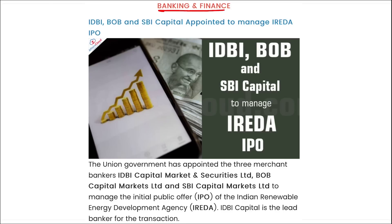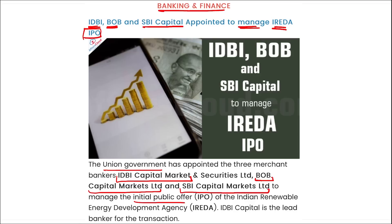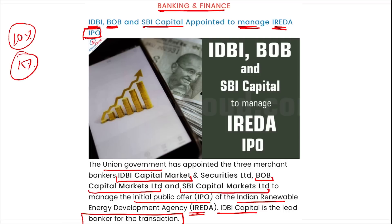Next is Banking and Finance. IDBI, Bank of Baroda, and SBI Capital have been appointed to manage the IREDA IPO. The union government appointed three merchant bankers — IDBI Capital Markets being the lead banker for the transaction. Saraf and Partners was appointed as the legal advisor. This IPO, expected in fiscal year 2024, likely comprises a 10% stake sale by the government and 15% fresh equity issuance by the renewable energy project financer. IREDA is a Mini Ratna Category One government enterprise.